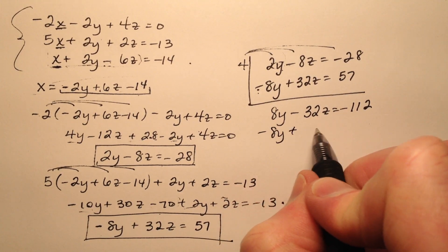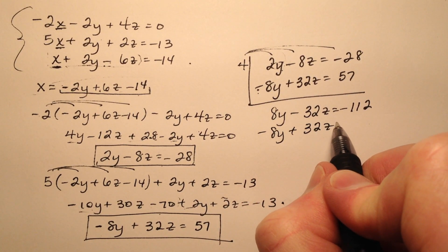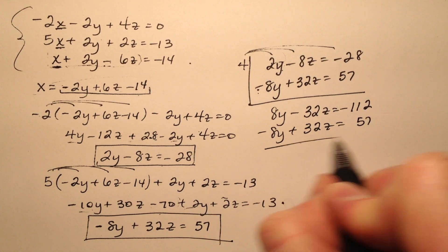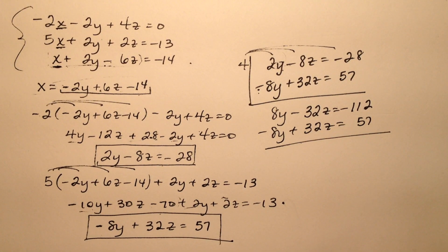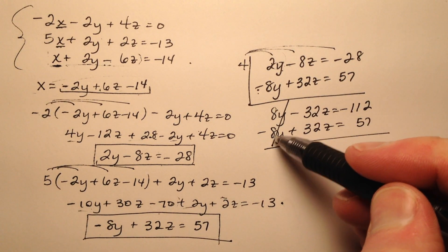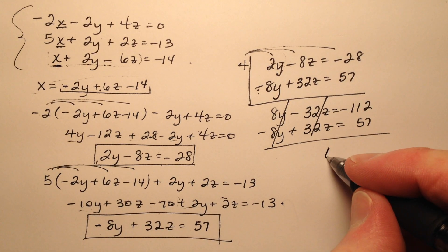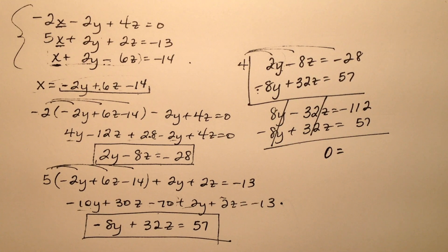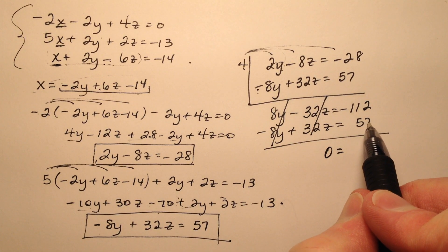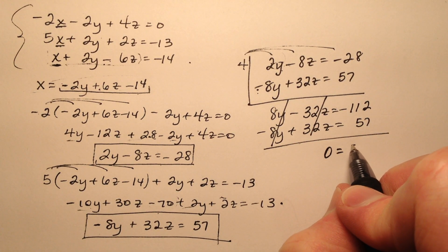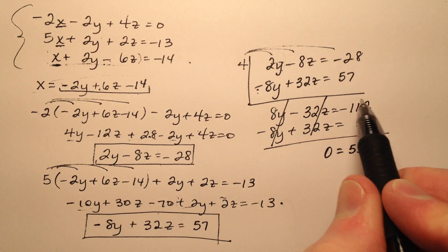So now when I rewrite this second equation which has been left unchanged, something interesting here. Looks like my y's cancel, which was by design, but it looks like my z's also cancel. So I have 0 equals, and what it looks like I have here is going to be a 55, and it will be negative.